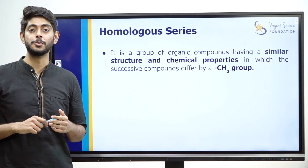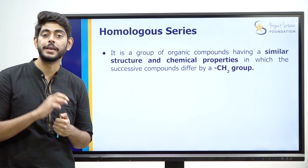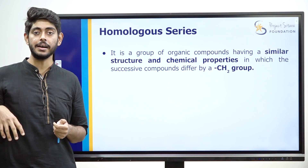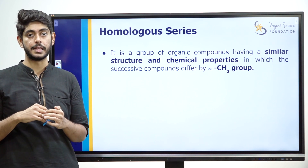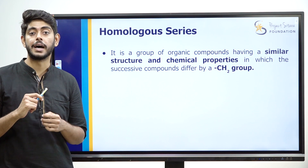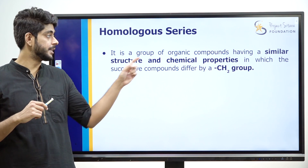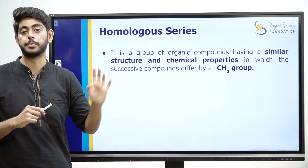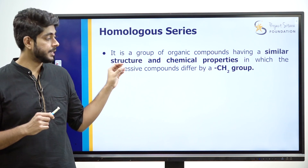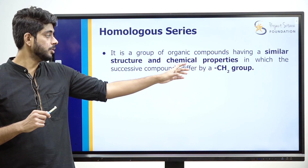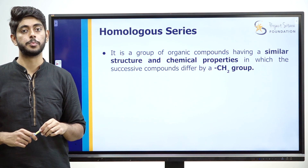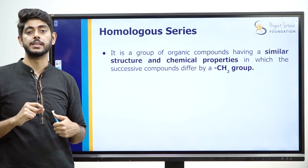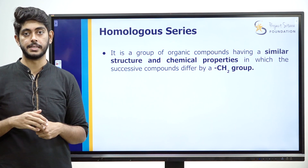After functional groups, our next topic is homologous series. Homologous means similar. So, homologous series of carbon compounds is a group of organic compounds having similar structure and chemical properties, in which the successive carbon compounds differ by a CH2 group. Each carbon compound differs from the next by one CH2 group.